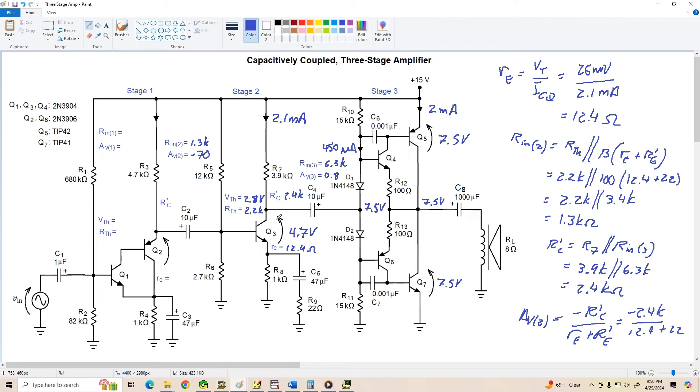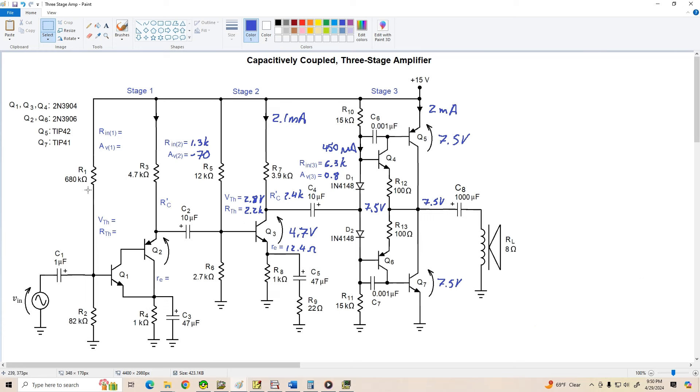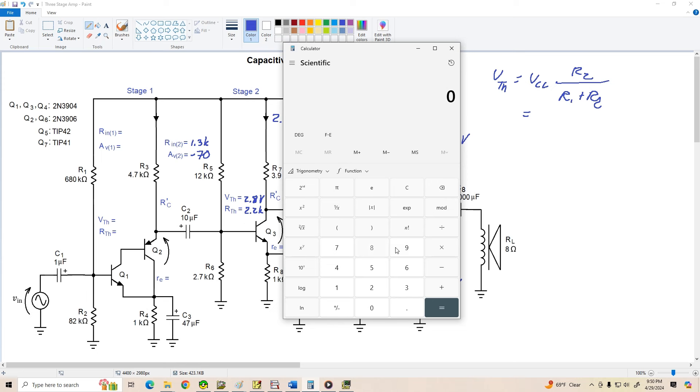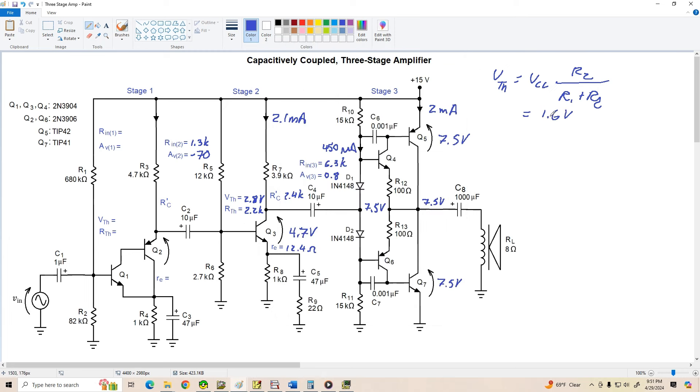Now we've figured out just about everything we need to know about stage 2. Let's move on to stage 1 now. So let me clear my workspace a third time. And we'll get to work on stage 1. We need to find VTH again. So VTH for stage 1 is VCC times R2 over R1 plus R2. R2 is 82K divided by 82K plus 680K times 15 is about 1.6 volts. So we've got a VTH of about 1.6 volts for stage 1.